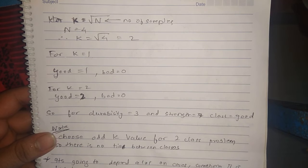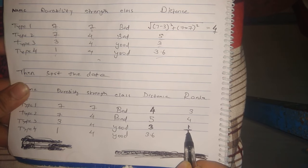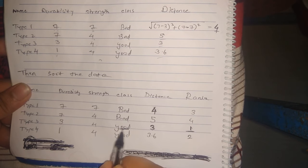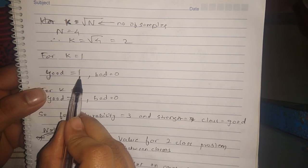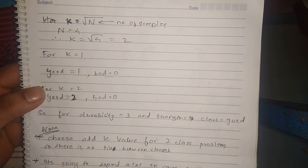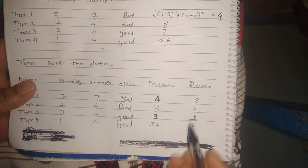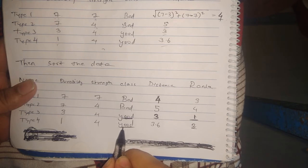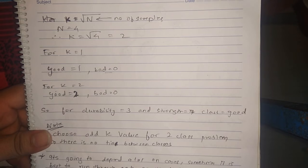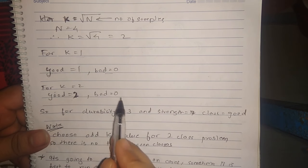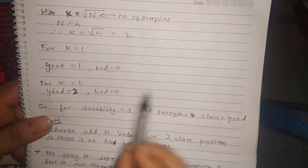For k = 1, we check rank 1 — the class is 'good', so count of good = 1 and count of bad = 0. For k = 2, rank 2 also has class 'good', so now good = 2 and bad = 0. We have reached the limit of k = 2.